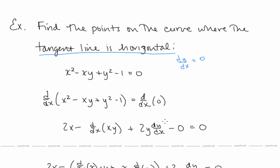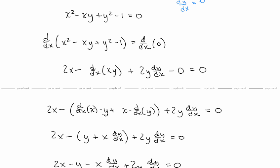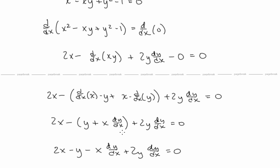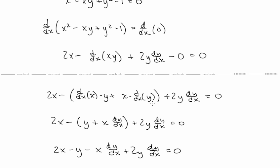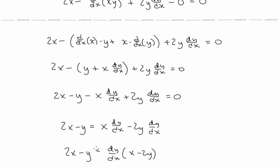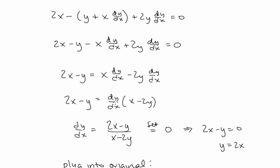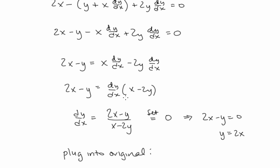The derivative of the right side is 0. Using the product rule, the derivative of xy gives 1 times y plus x·dy/dx. That's y plus x·dy/dx, all inside parentheses with a negative on the outside because we had a negative xy term — so it's important that the negative applies to the entire result. We distribute the negative sign, collect dy/dx terms to one side, factor out dy/dx, and divide by the remaining factor. So dy/dx equals (2x minus y) over (x minus 2y).